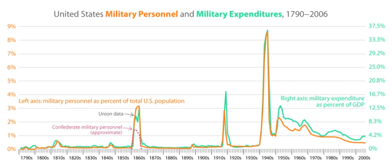Code named Operation El Dorado Canyon, the operation comprised joint United States Air Force, Navy, and Marine Corps air strikes against Libya on 15 April 1986. The attack was carried out in response to the 1986 Berlin Discotheque bombing, and resulted in the killing of 45 officers and 15 civilians.